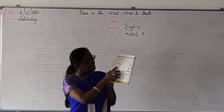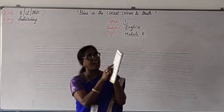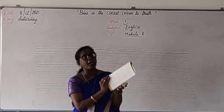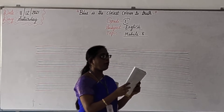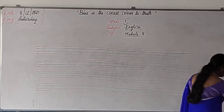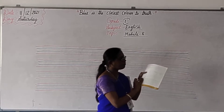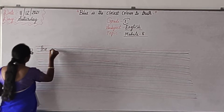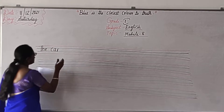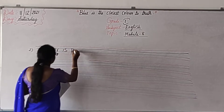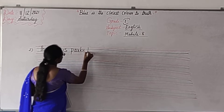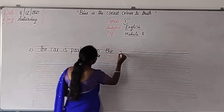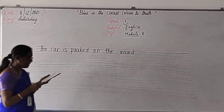Second one — what is that? What is this, children? Car. Correct. The car is parked. Where is it being parked? The car is parked on the road. I will write it down and you have to write too. The car is parked on the road. Touch the line and write correctly.